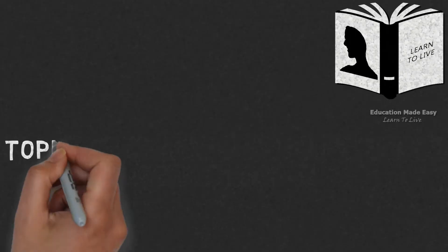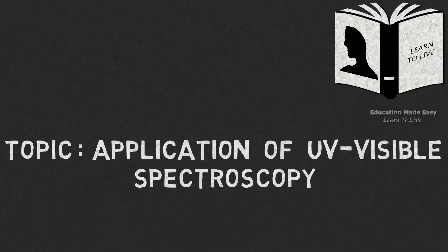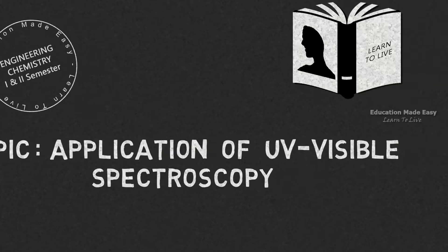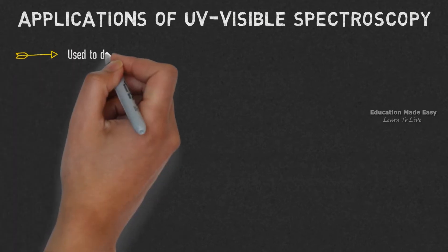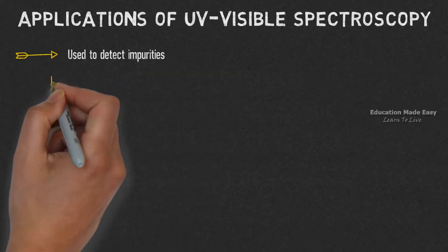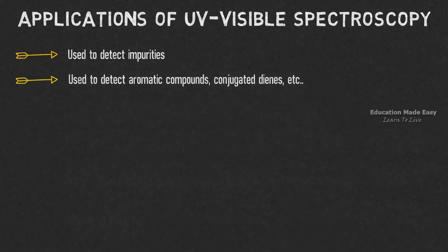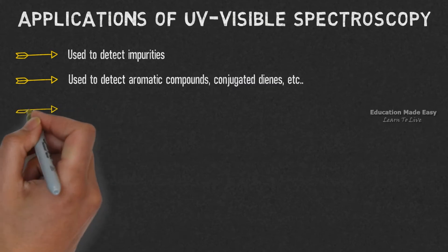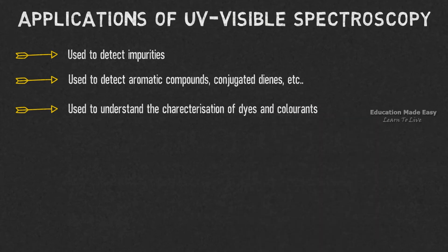Dear students, welcome to Learn to Live. This video is based on the topic: application of UV-visible spectroscopy. Some of the main applications of UV-visible spectroscopy are: it is used to detect impurities, it is used to detect aromatic compounds, conjugated dienes, etc. It is also used to understand the characterization of dyes and colorants.